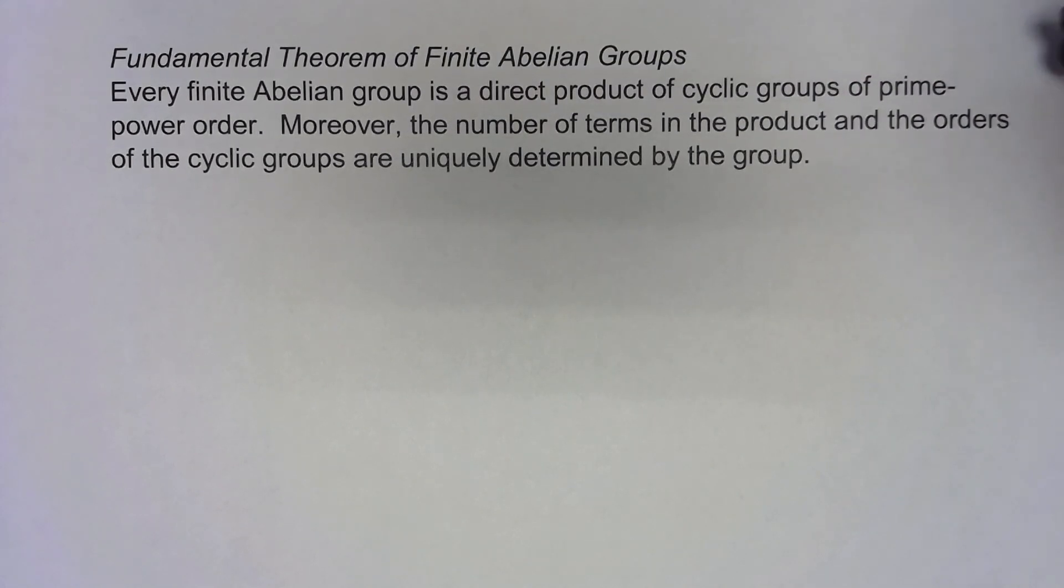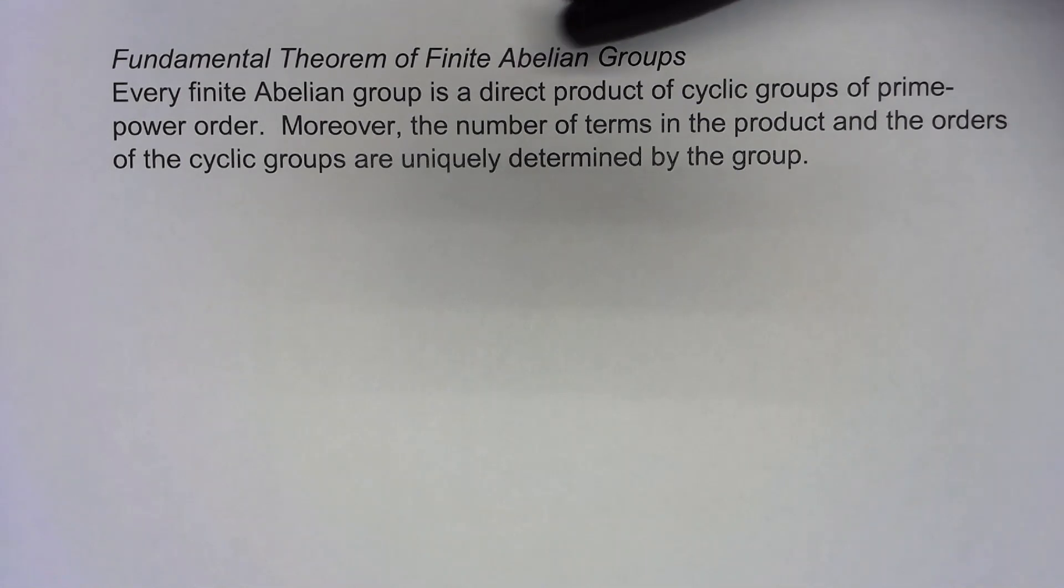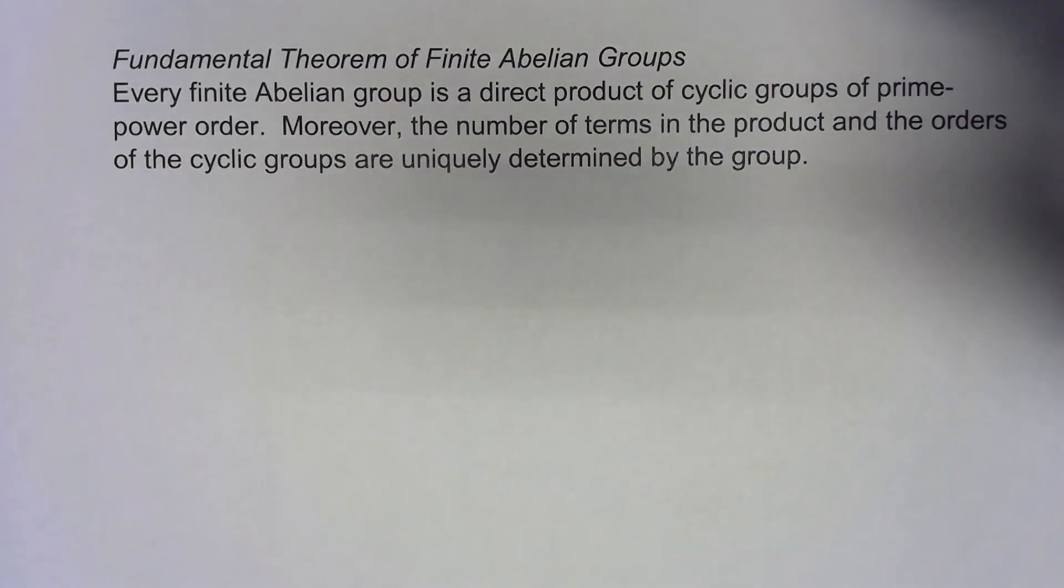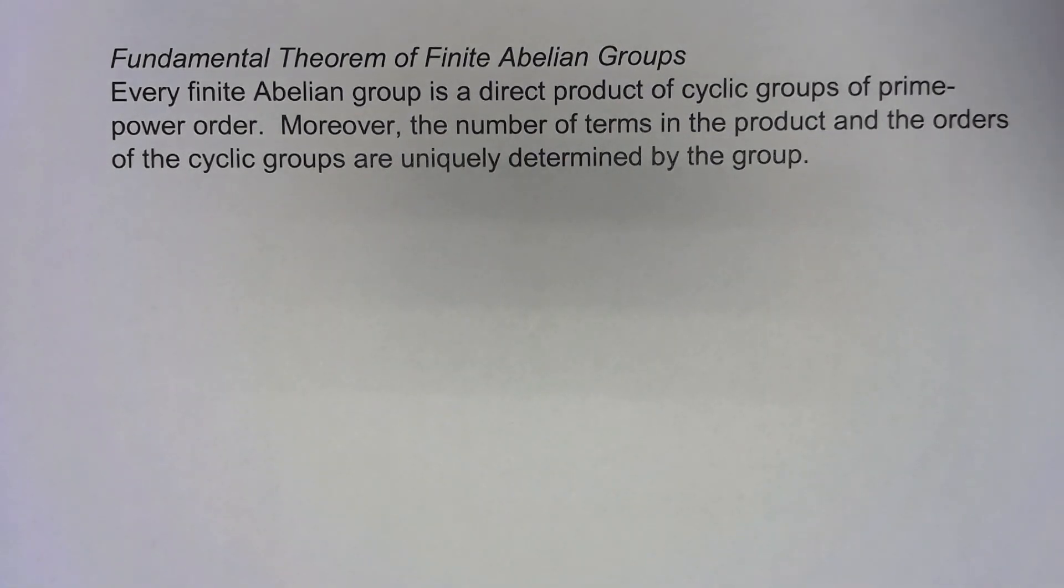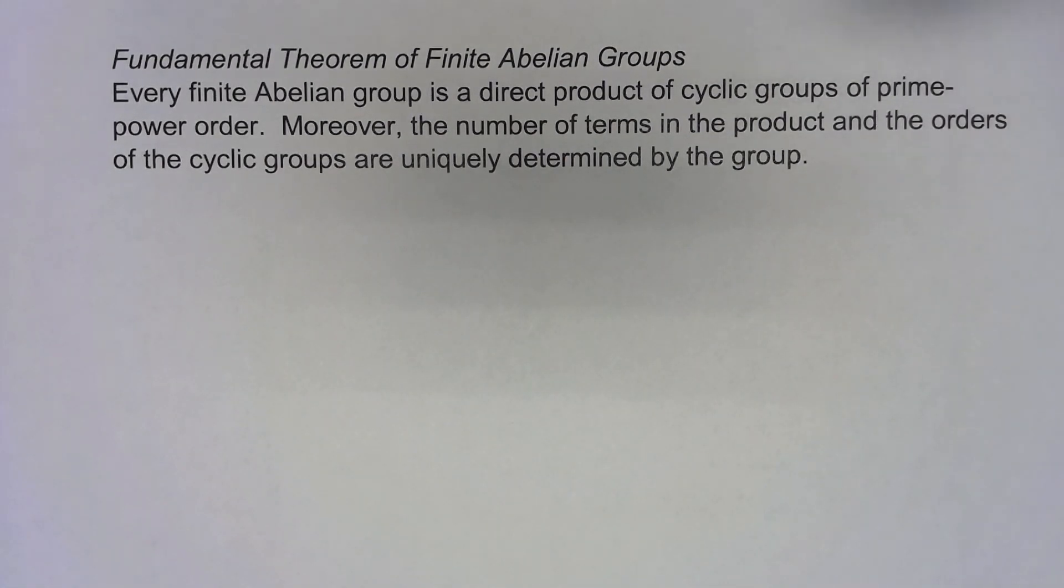It's this moreover that's probably the more important part. The number of terms in the product and the orders of the cyclic groups are uniquely determined by the group. What this really ends up doing is it allows us to classify all finite abelian groups. We can write them up to isomorphism as a direct product of these cyclic groups.